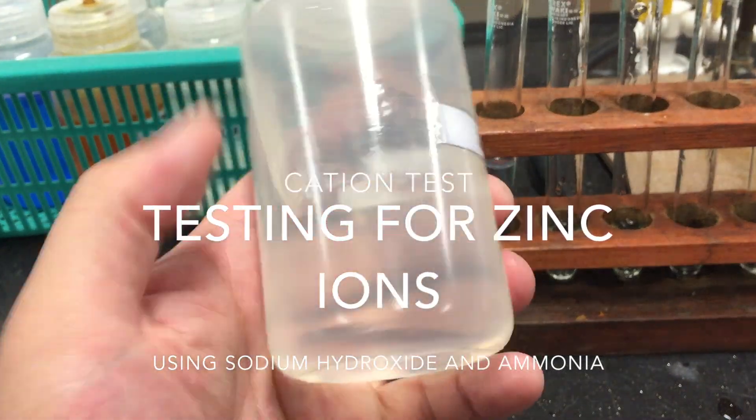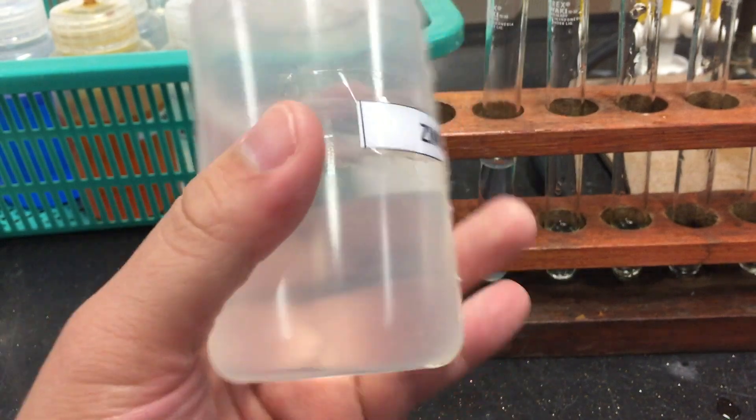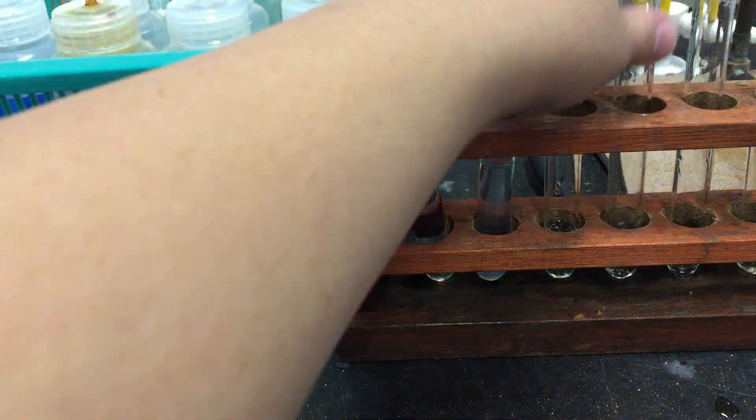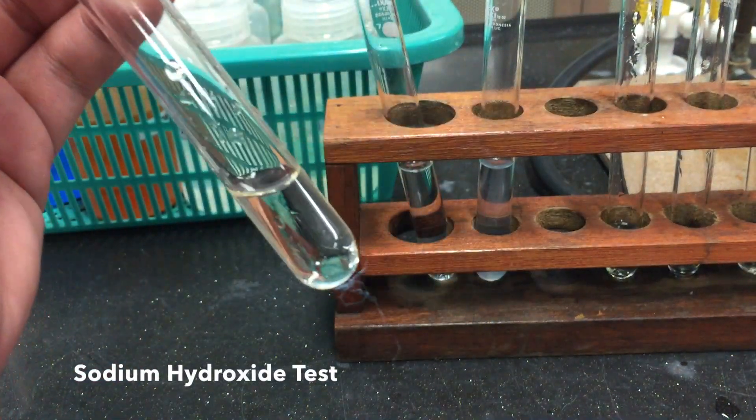Solutions containing zinc ions are usually colorless. You may test for the presence of zinc ions using the sodium hydroxide test.